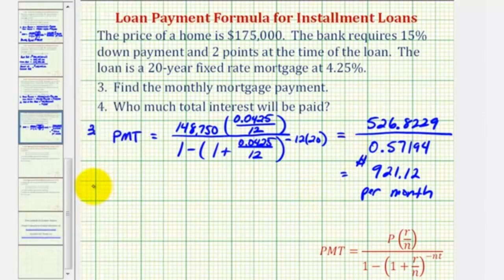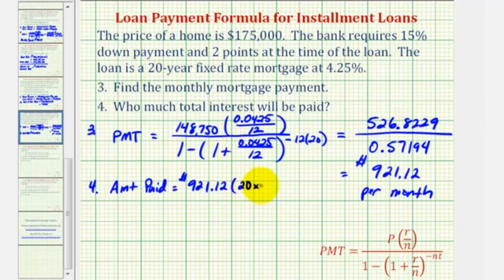Now for number four, we want to determine the total interest paid for this loan over the 20 year period. So to do this, we'll first find the total amount paid and then subtract the loan amount. So the amount paid over the 20 years is going to be the monthly payment, 921 dollars and 12 cents, times the number of months over 20 years. That would be 20 times 12, or 240.